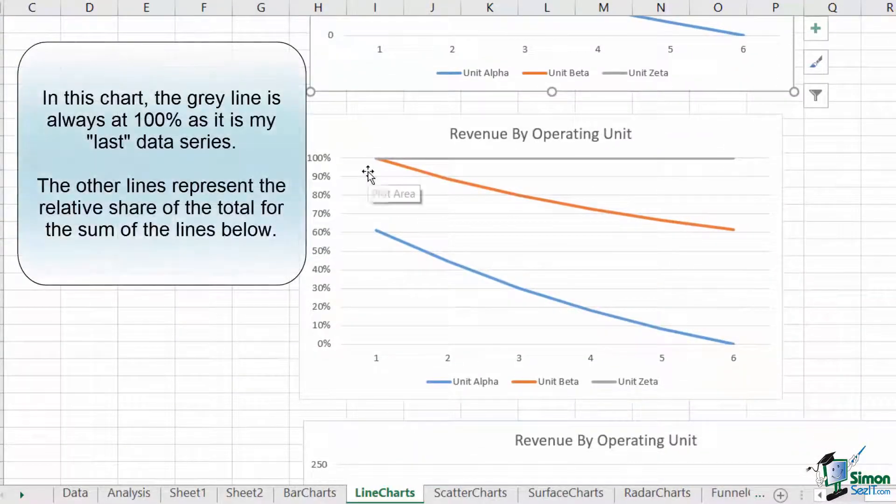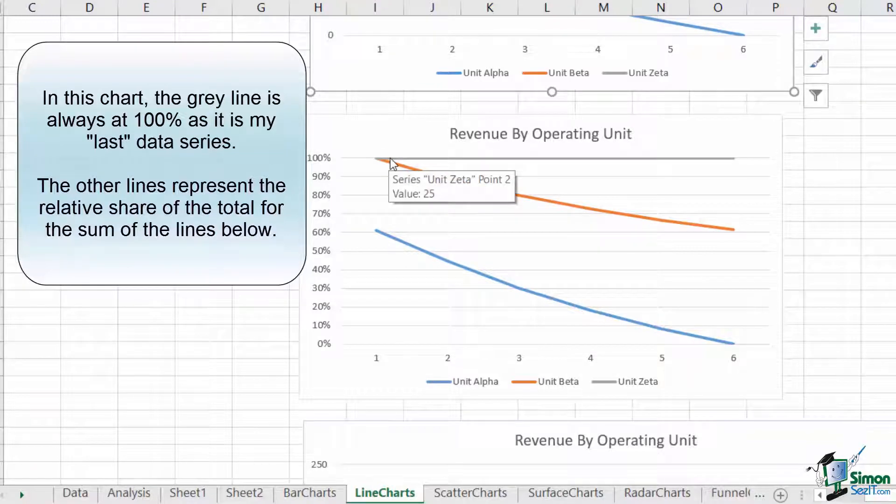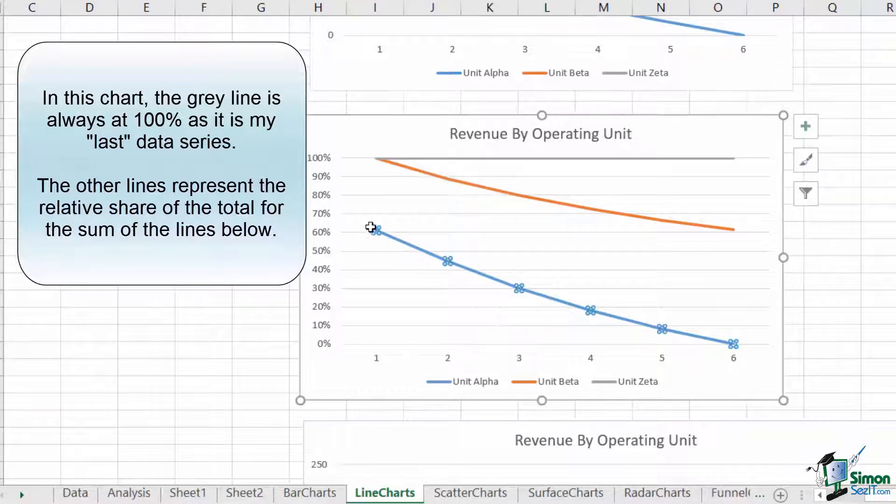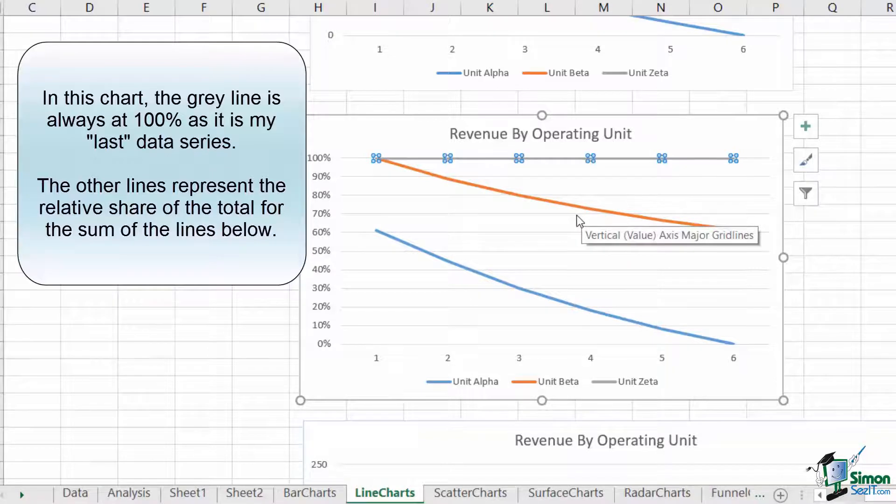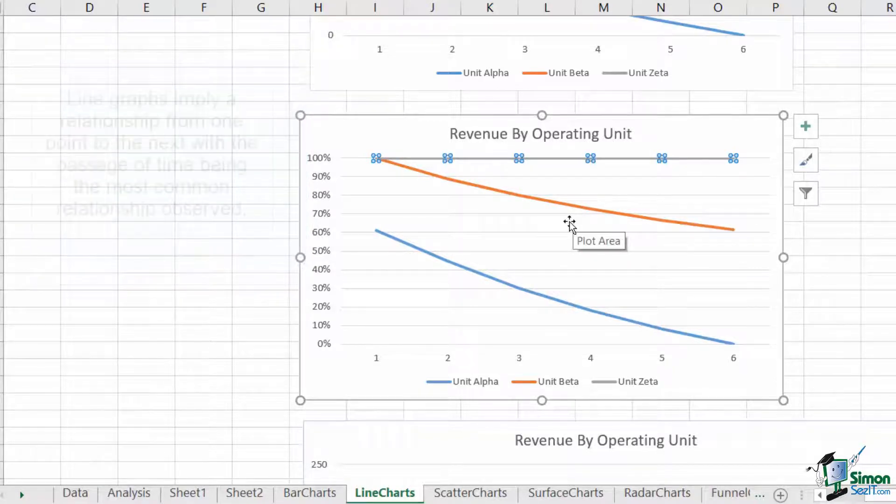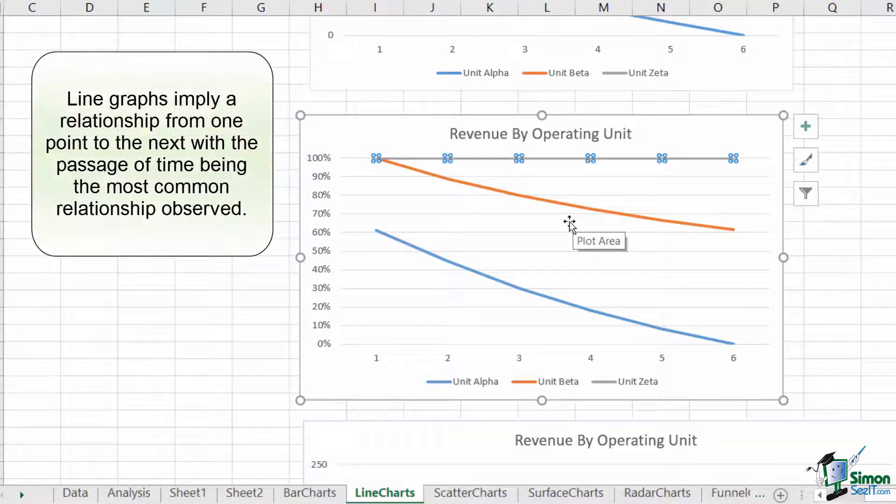The stacked 100% line does the same thing, except it sets its total to 100%. So you can see that the blue line starts at 60% and ends up at 0%. But when adding the blue, the orange, and the gray, you always end at 100%. These charts are most often useful for looking at how they change over time.